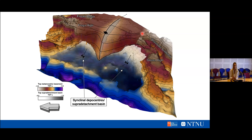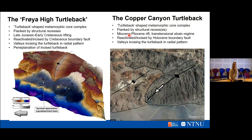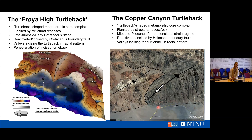Why have we called it a turtle back? We believe there's an analog relationship between the footwall geometry for the Freyja High and the Krochfall complex to what we see in the Basin and Range in the western US. This is the Copper Canyon turtle back, which also has this turtle back shaped metamorphic core complex in its footwall and structural recesses flanking it. This thick stippled line is where the detachment wraps around this turtle back. We also have some reactivation partly incising the turtle back structure, and we see that same feature in the northern structural recess on the Freyja High.